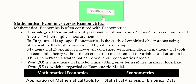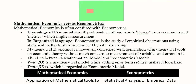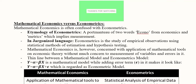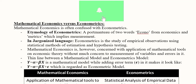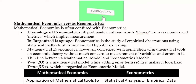In our last video we were focusing on literary and mathematical economics, their differences. Now we will differentiate between mathematical economics and econometrics. This is required because econometrics can sometimes be mixed up with mathematical economics, so we are going to draw some line between these two quantitative ways of studying economics. Mathematical economics is usually confused with econometrics, and that is something we want to avoid.